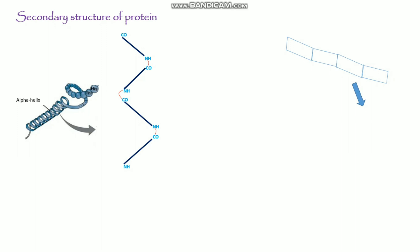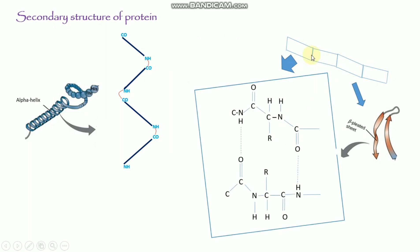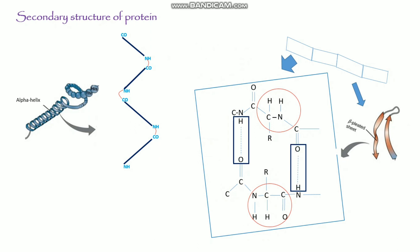The beta sheet is another kind of secondary structure. The polypeptide chains are stacked or lined up next to each other, and the hydrogen molecules form intermolecular bonds to give a sheet-like structure. This is the beta sheet. Each plane contains this kind of structure. When different amino acids bind together by the hydrogen bond, it forms the sheet-like structure. These are the hydrogen bonds.